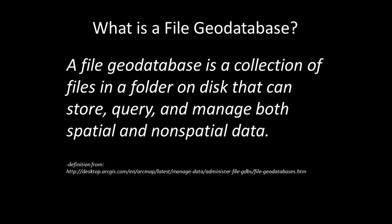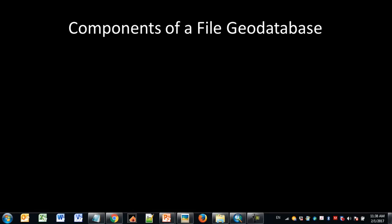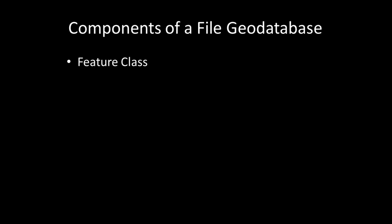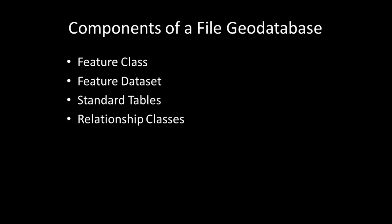In the next part of this lesson, I discuss specific components of a file geodatabase. I will discuss some of the common elements, though this will not be a thorough, exhaustive discussion of every aspect. Rather, I will focus on the elements you will likely first encounter. The five elements I will cover are: feature class, feature dataset, standard tables, relationship classes, and attribute domains.